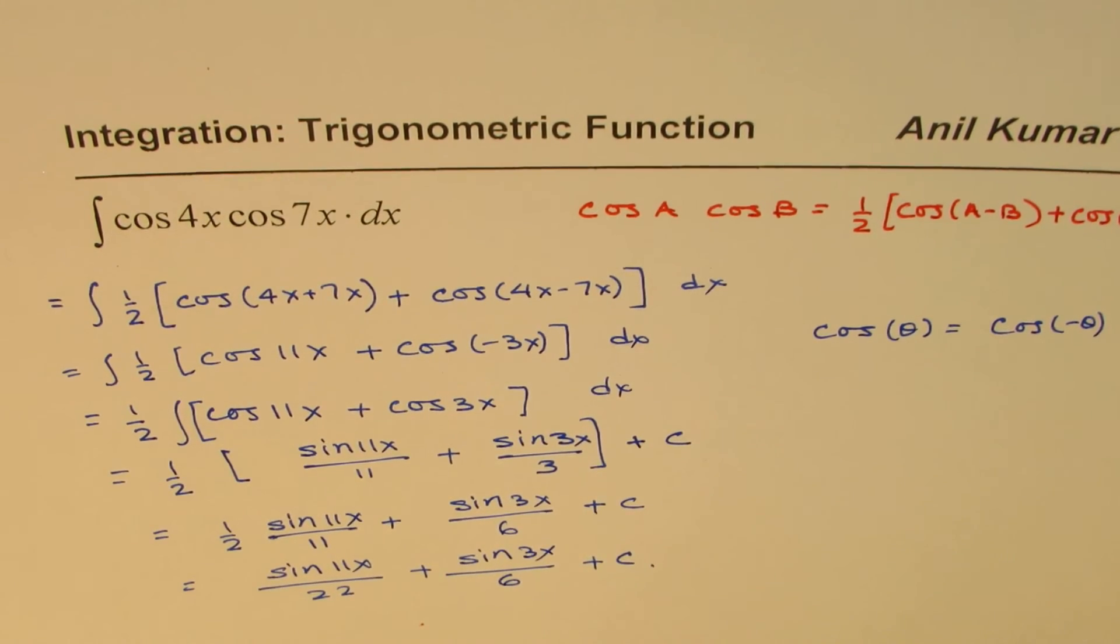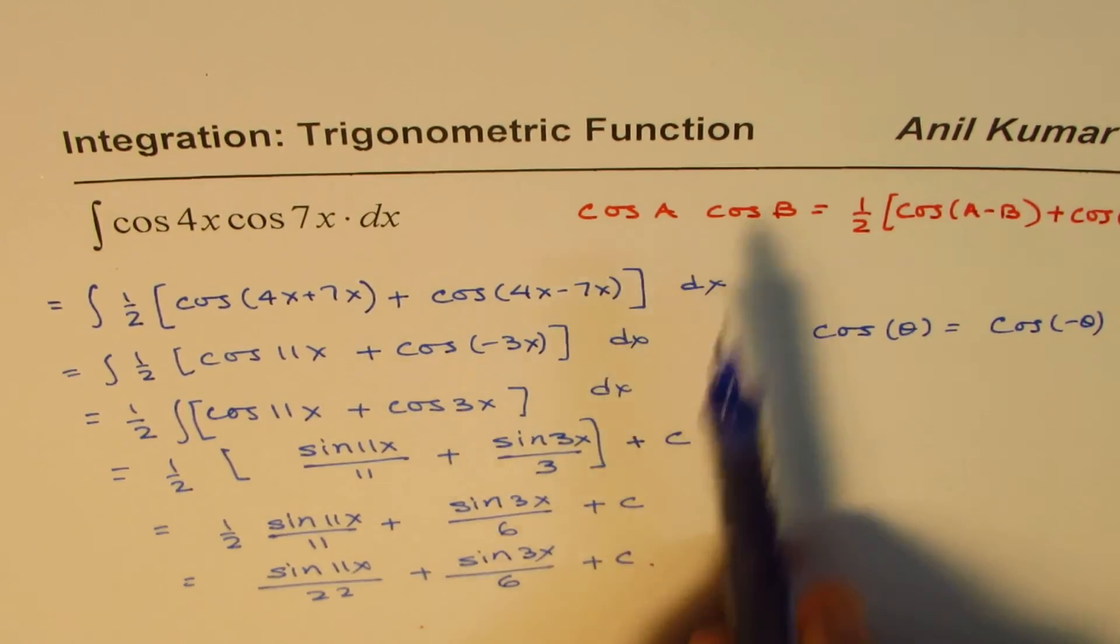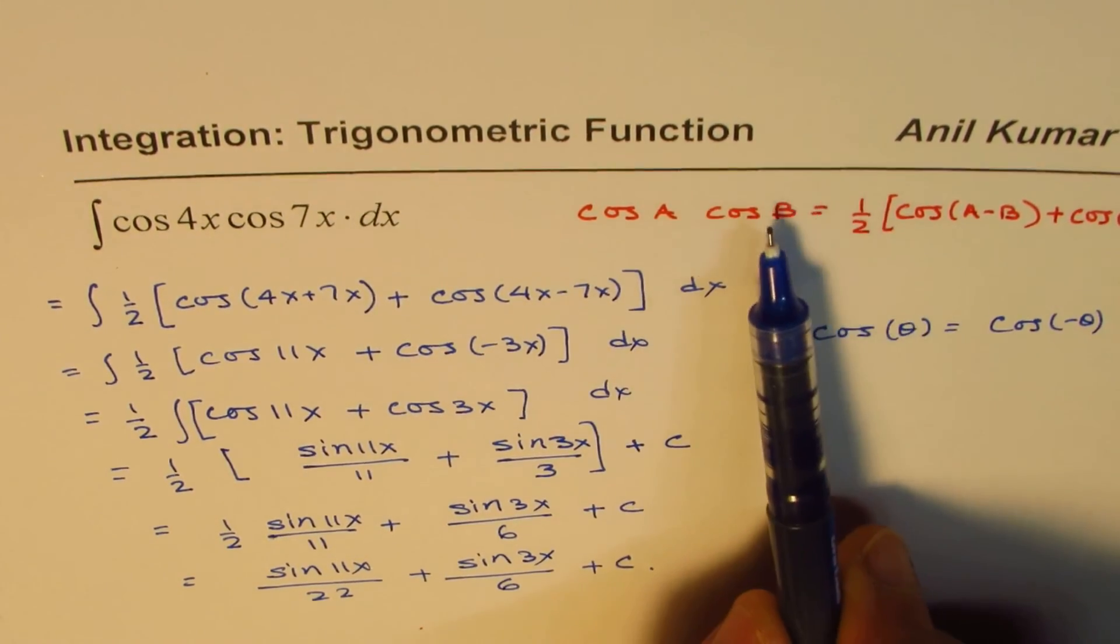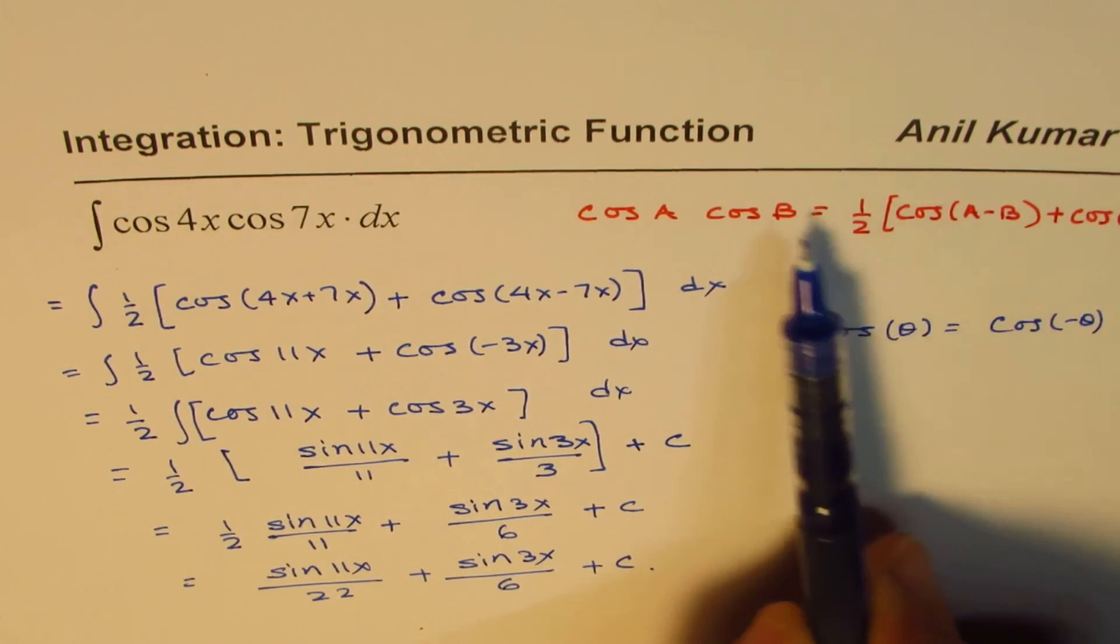So that is how we can do integration of product of cosine functions. Whenever you have product of cosine functions, you could use this formula to convert product to sum and difference.